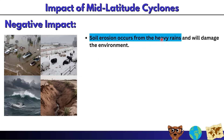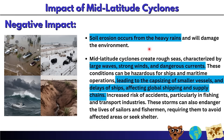Soil erosion occurs from heavy rains and damages the environment. Mid-latitude cyclones create rough seas characterized by large waves, strong winds, and dangerous currents, which are hazardous for ships and maritime operations — leading to capsizing of smaller vessels and delays affecting global shipping and supply chains. There is an increased risk of accidents in fishing and transport industries. These storms endanger sailors and fishermen, requiring them to avoid affected areas or seek shelter, causing loss of income for those who rely on fishing.